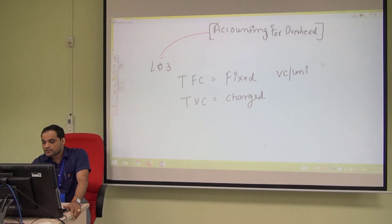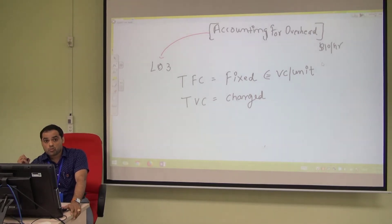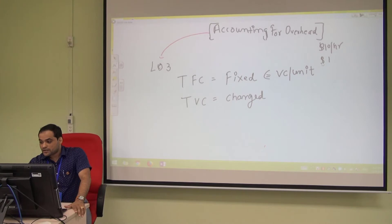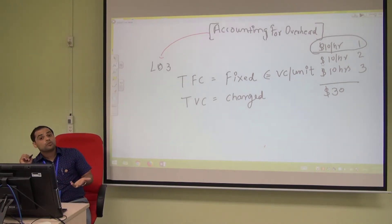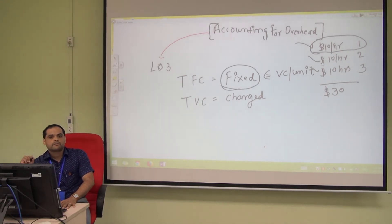The behavior of variable cost per unit is fixed. For example, if you pay a worker 10 dollars per hour and the worker works 3 hours, your total variable cost is 30 dollars. But your labor cost per hour remains 10 dollars — so variable cost per unit is always fixed.